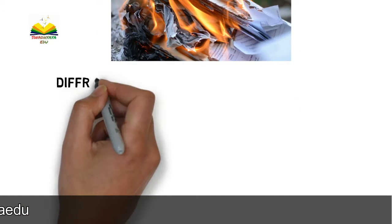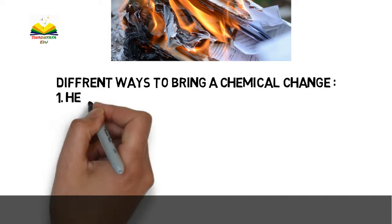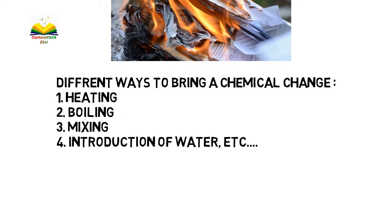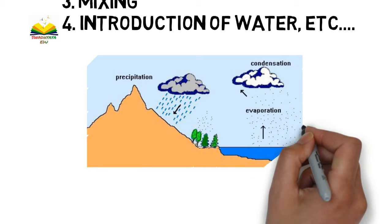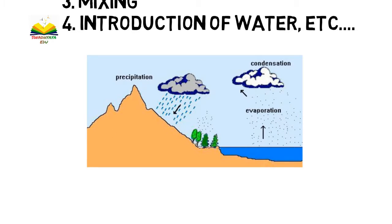Different ways to bring about a chemical change: the first is hitting, the second is boiling, the third is mixing, and the fourth is introduction of water, etc. Many chemical changes require hitting; for others, mixing is needed, and introduction of water may also be required.